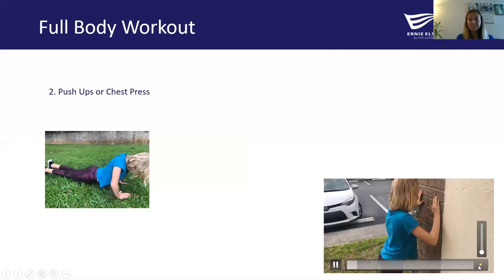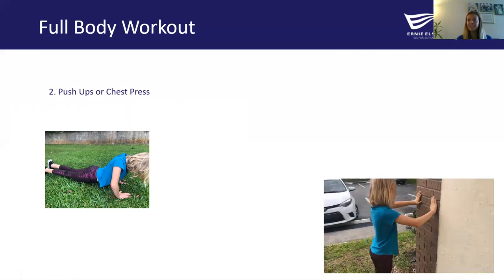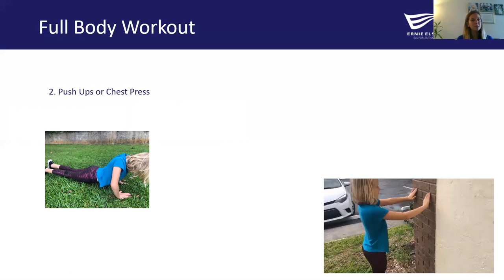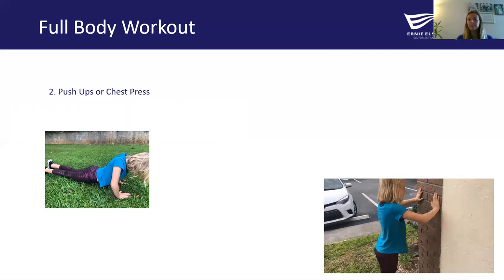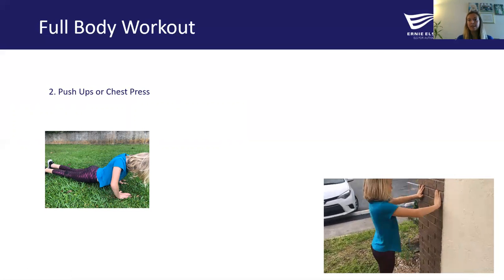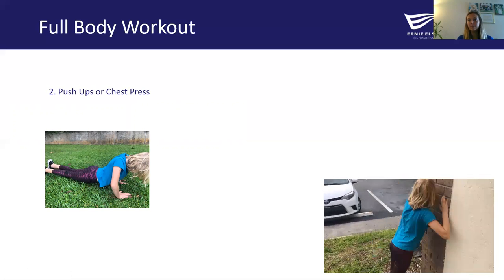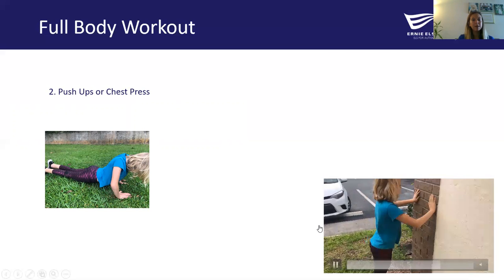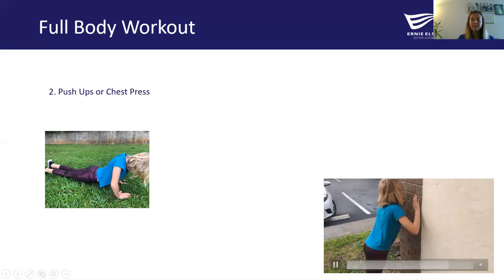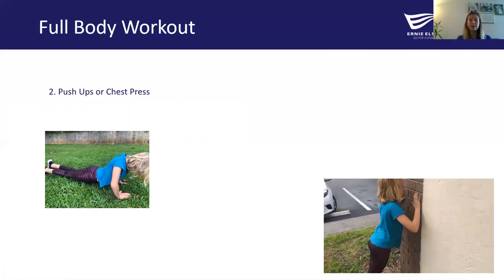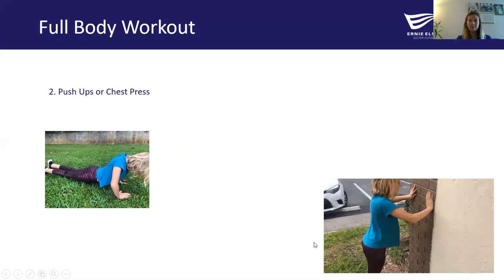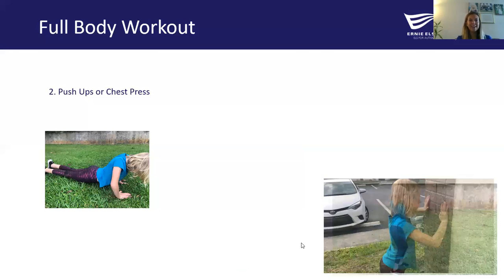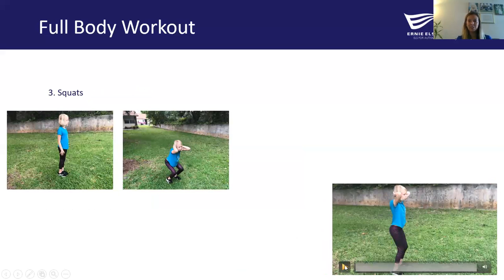Once you're done with your jumping jacks, we have our push-ups or chest press. You can do your push-ups on the ground either on your knees — those are your assisted push-ups — or on your toes. Make sure your body stays nice and straight; the only movement should be in those elbows and a little bit of the shoulders. Bending the elbows to lower your body to the ground, and then extending those elbows back up so that we're in that high plank. Pause, do for 30 seconds, and come back for exercise three.